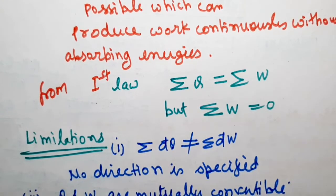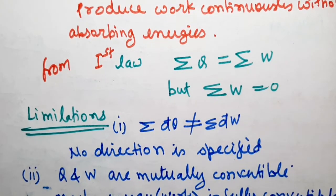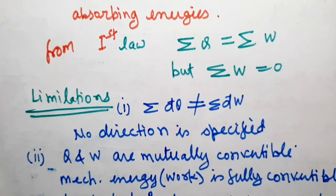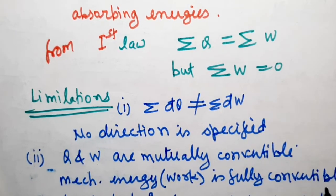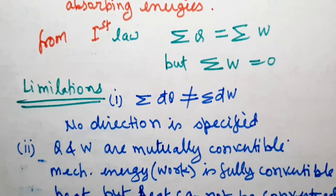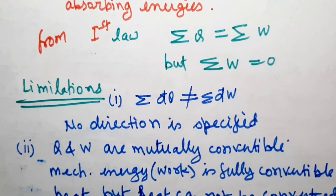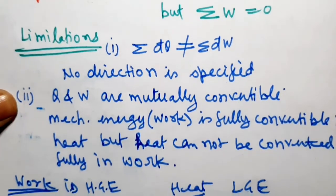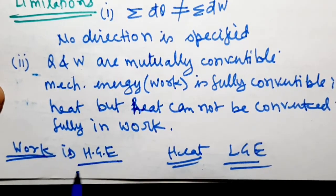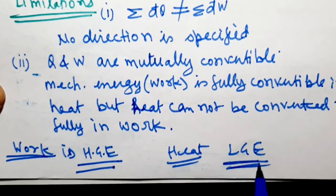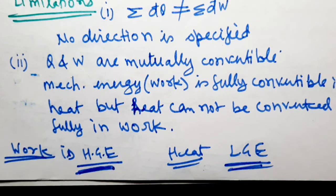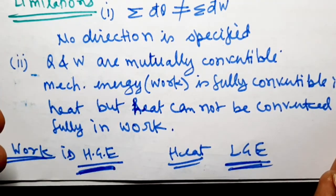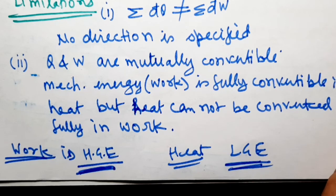The second limitation is that heat and work are mutually convertible. Work can be fully converted into heat, but heat cannot be fully converted into work, because heat is low-grade energy while work is high-grade energy. High-grade energy can be fully converted into low-grade energy, but low-grade energy cannot be fully converted into high-grade energy.